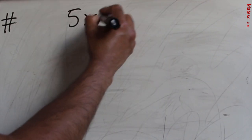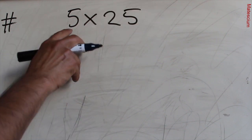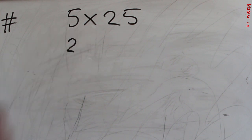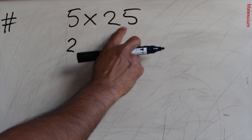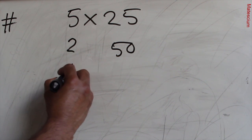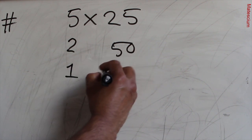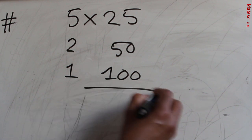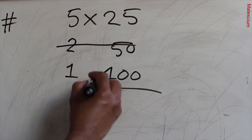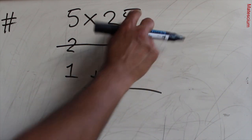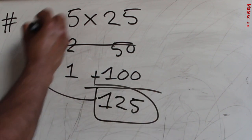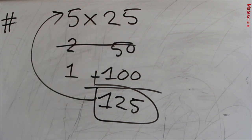Let's make another example: 5 times 25. Make half of 5 — half of 5 means 2.5, only write 2 here, no fractional number is allowed. Make double of 25 — that means 50. Half of 2 means 1, and double of 50 means 100. Look here — this is an even number and an even number, so all even-number rows will be cancelled from our consideration. Add the remaining two numbers: 100 plus 25 is 125. That means 5 times 25 is 125.